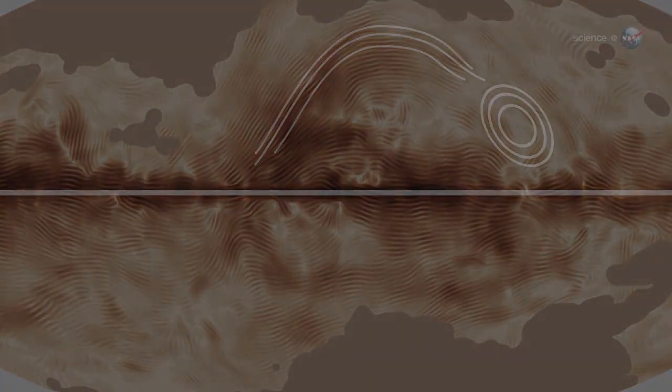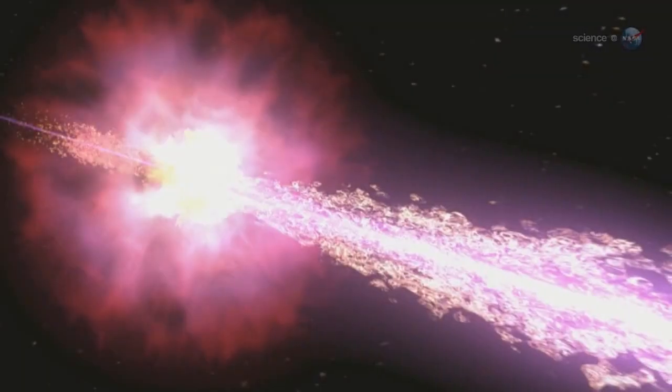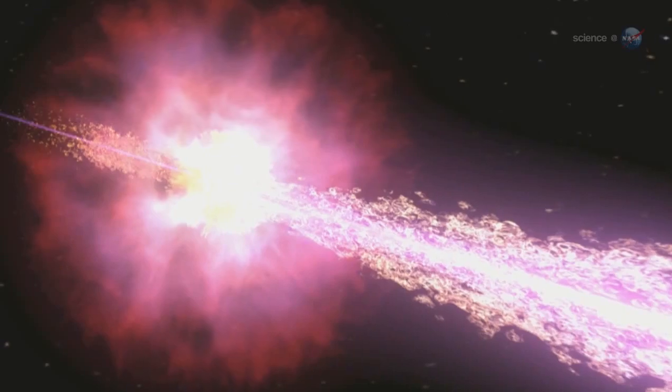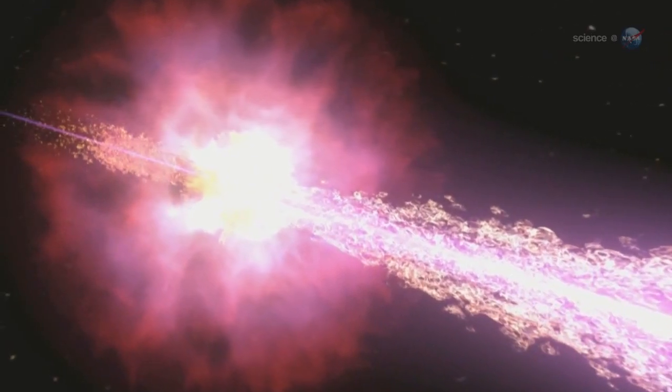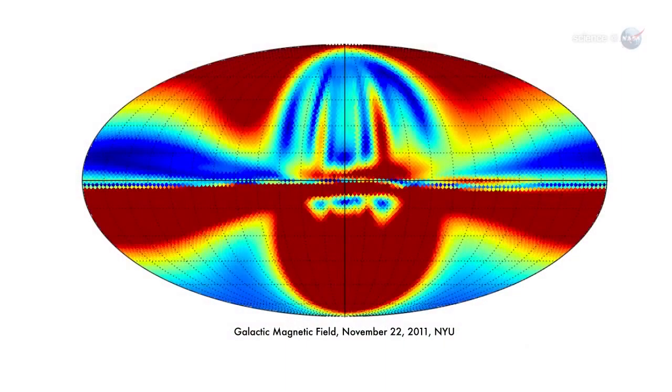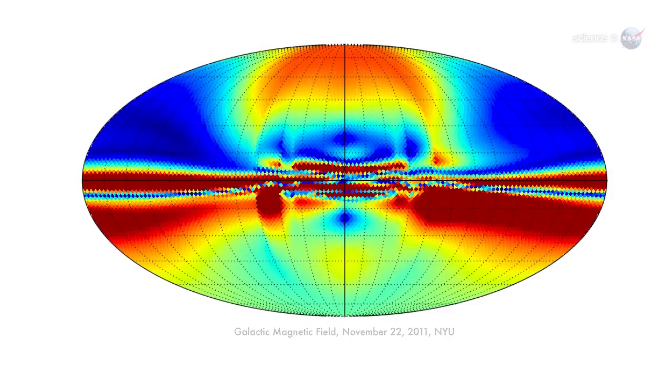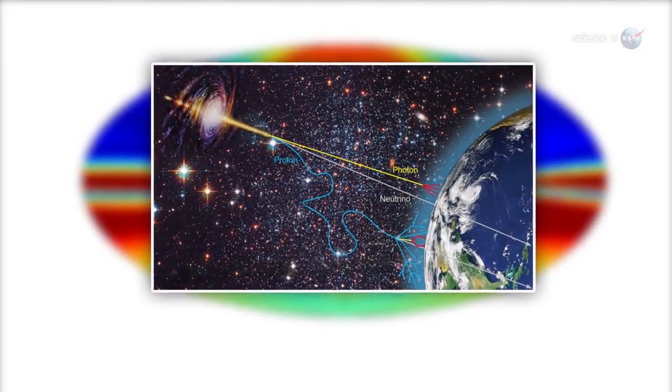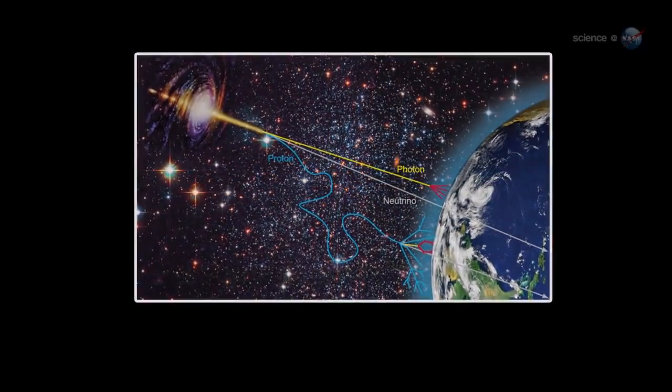Mapping these details is important. For one thing, notes Ferriere, it helps us understand very high-energy cosmic rays. These mysterious particles are deflected by the Milky Way's magnetic field, tracing them back to their point of origin requires knowing that field's morphology.